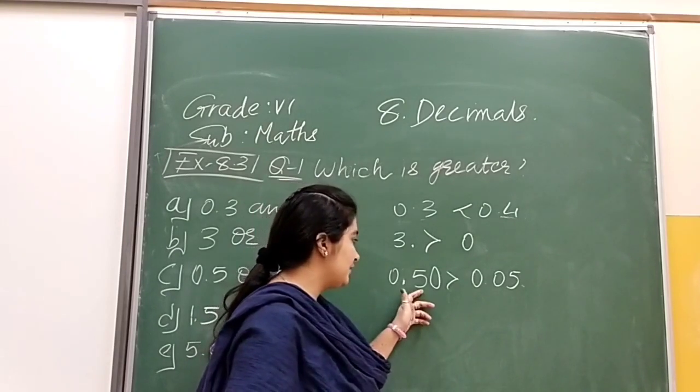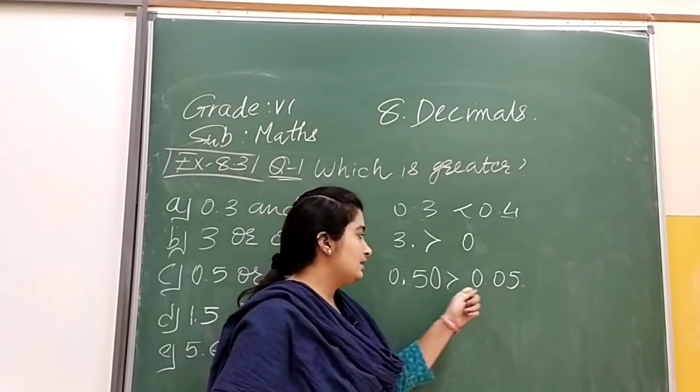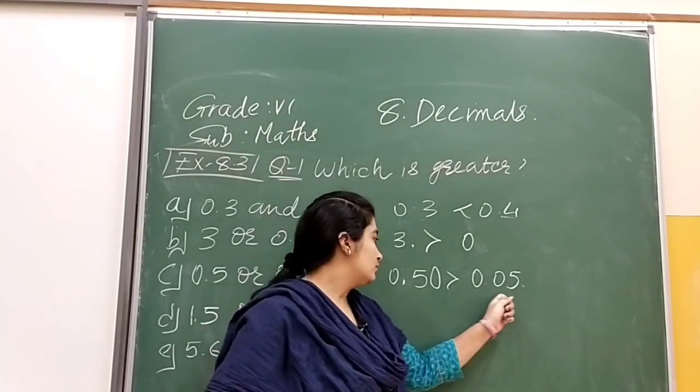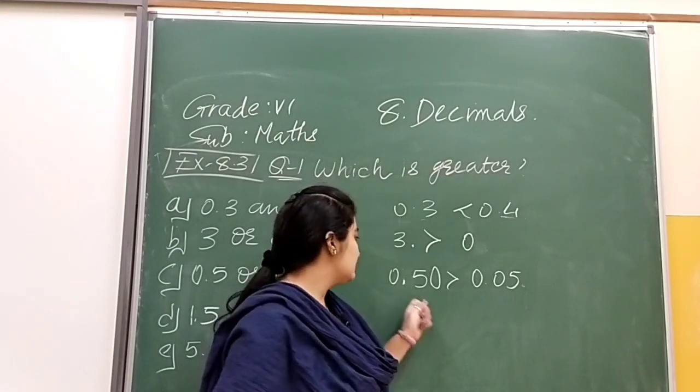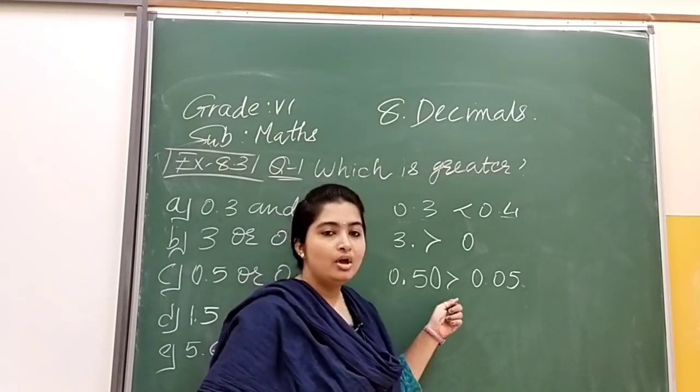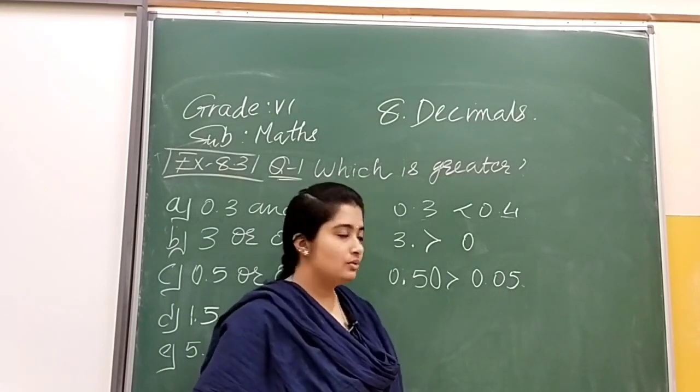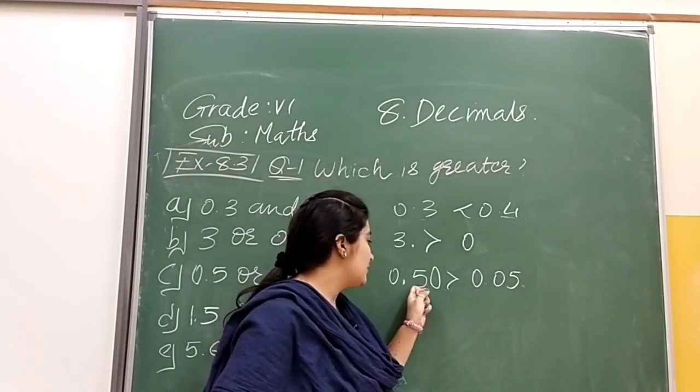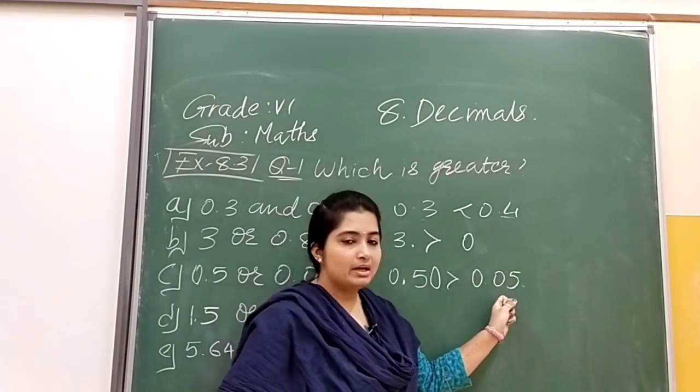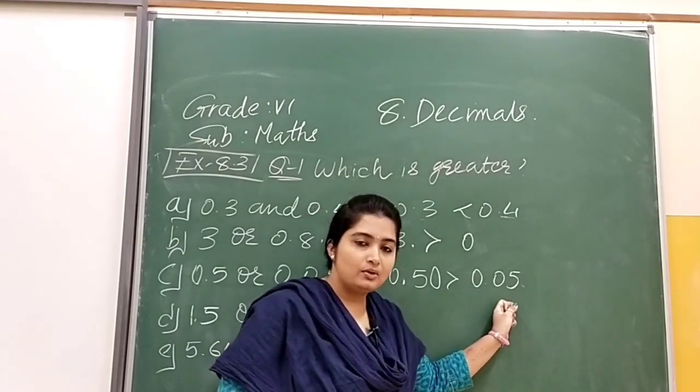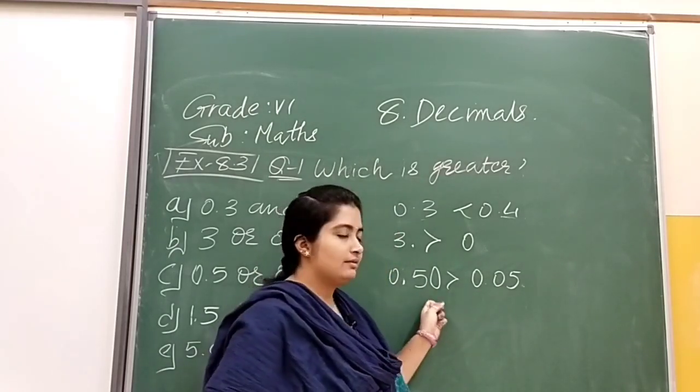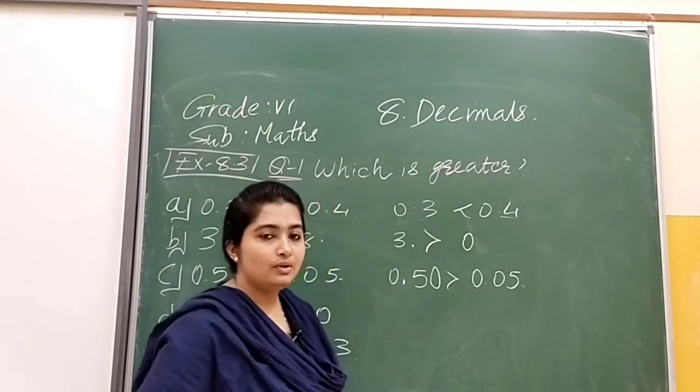In the tenths place, here we have 5, but here we have 0. So which number is greater? Obviously 0.50 is greater than 0.05. Why? Because here in the tenths place we have 5, but here in the tenths place we have 0. So 0.50 is greater than 0.05.